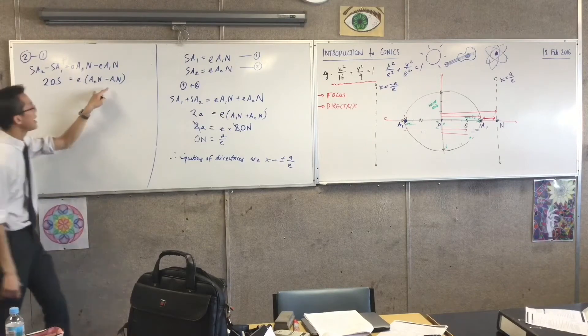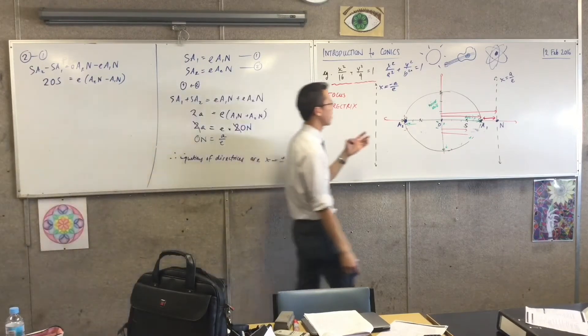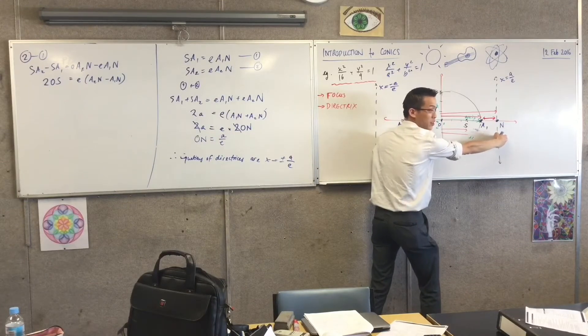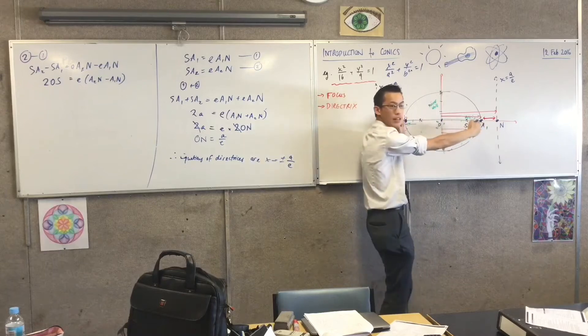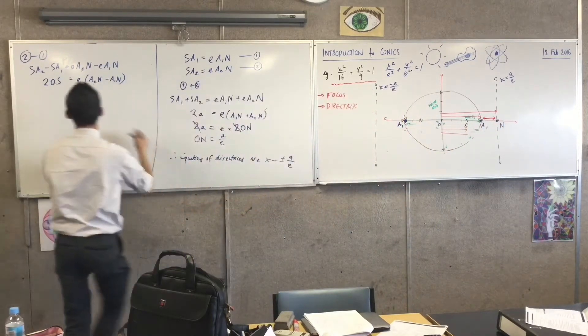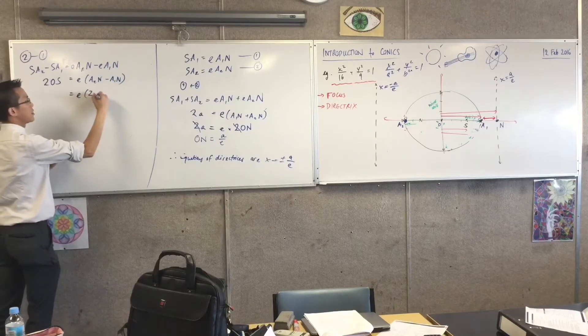What about this guy? What did you make of that? A2N. A2N, where is he? A2N take away A1N. What is that? This is easier, isn't it? Major axis. Yeah, you're taking away that gap, and all you get left with is the major axis, which is 2A, right? So, I've got A times 2A.